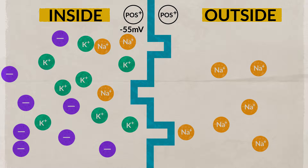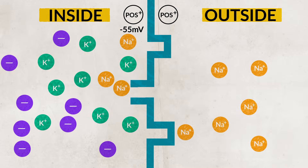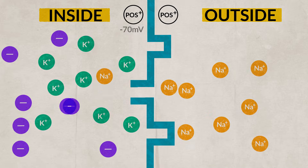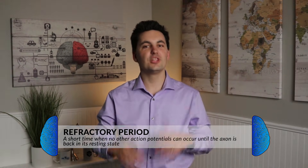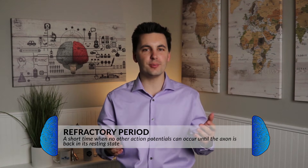During repolarization, different ion channels open back up to rebalance the charges by letting more positive ions outside the cell membrane. When all of this is happening and the signal is moving down the axon, the neuron cannot respond to any other stimulus — this is known as the refractory period. When this happens, the neuron needs another stimulus in order to meet the threshold, or intensity level, to be able to fire again.